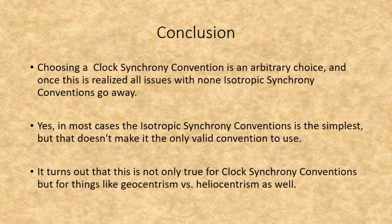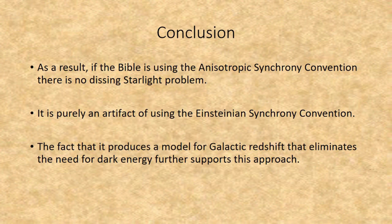Yes, in most cases the Isotropic Synchrony Convention is the simplest, but that does not make it the only valid convention to use. This is true not only for clock synchrony conventions but for things like geocentrism versus heliocentrism as well. As a result, the Bible is using the Anisotropic Synchrony Convention. There is no distant starlight problem — it is purely an artifact of using the Einsteinian synchrony convention. The fact that ASC produces a model of galactic redshift that eliminates the need for dark energy is further support for this approach.